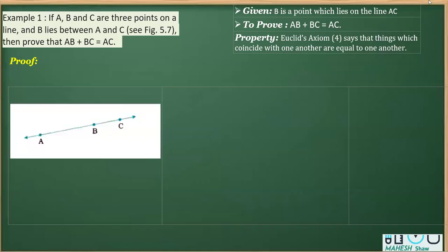We have one question from the chapter Euclid's Geometry, class 9. This question is based on the property that is Euclid's Axiom 4, which says that things which coincide with one another are equal to one another.